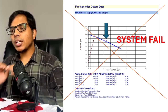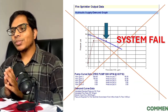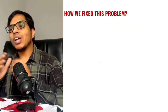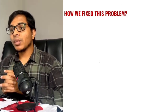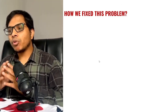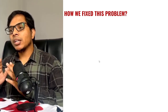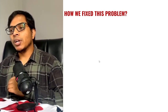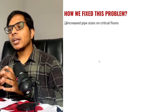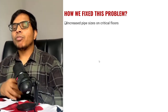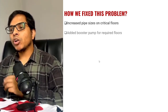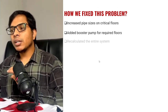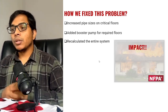Because of the wrong selection criteria, the system will fail catastrophically. During a fire, it would have definitely killed the people working in the office building. We fixed this by increasing the pipe sizes on the critical floor where the mechanical rooms are located, and also added booster pumps for those floors, then recalculated the entire system demand.